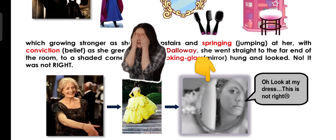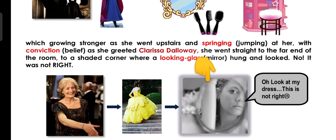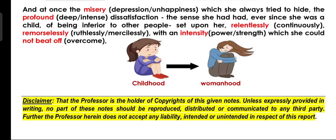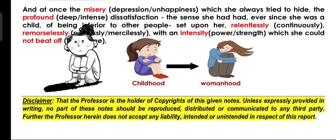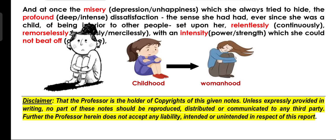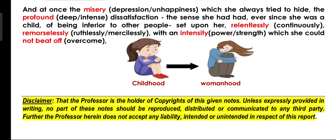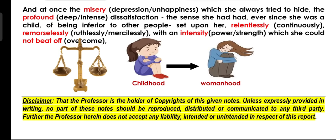Looking at the door and the mirror, she was very upset. In her mind she started feeling that this is not right, I am not feeling good. She had come to the party but was now seeing her own misery and depression, which she had been hiding from people. It is a deep dissatisfaction — she feels that she is less than other people. She relentlessly, even more remorselessly, with a lot of intensity and power, was thinking inferior thoughts about herself.